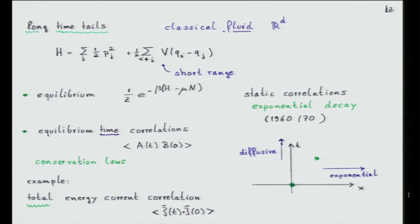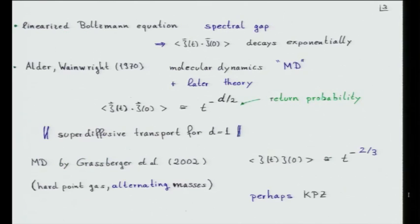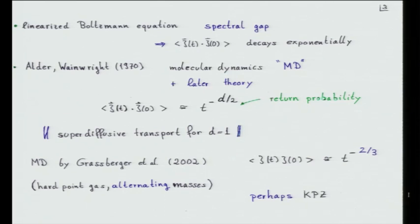That's a well-defined, nice self-adjoint operator. You can look at the spectrum, and for usual interactions like hard spheres or any short-range potential, you find this operator has a spectral gap. Therefore, at the level of kinetic theory, you do find exponential decay of current-current correlations. It's sort of like a Brownian particle — its position is diffusive, but its velocity has short-range correlations. For most simple models, you will actually have exponentially decaying correlations.